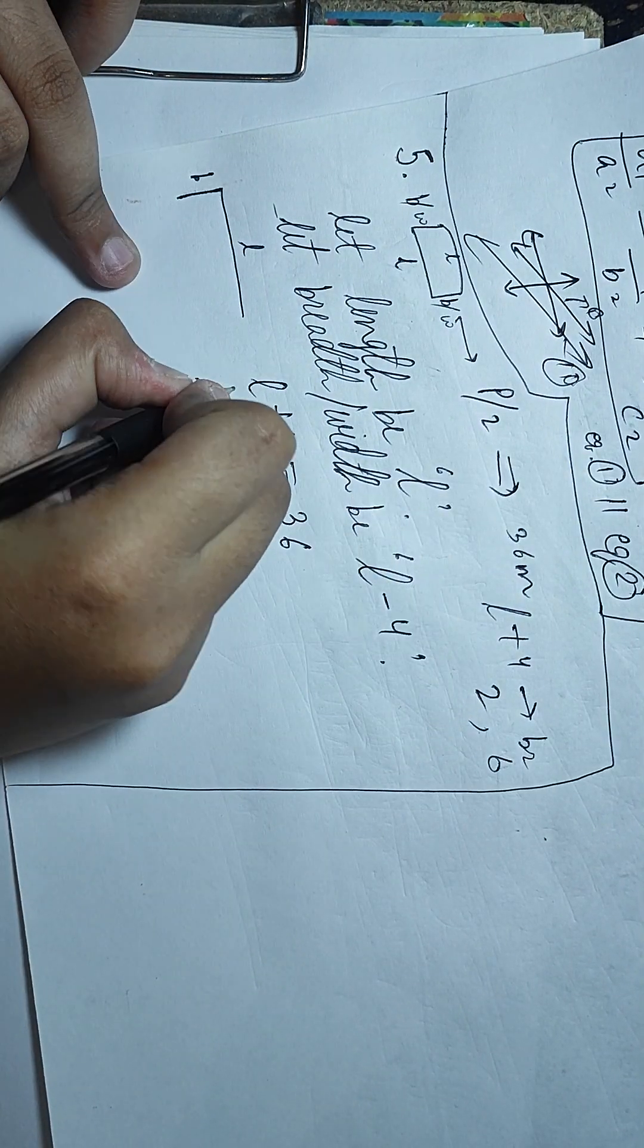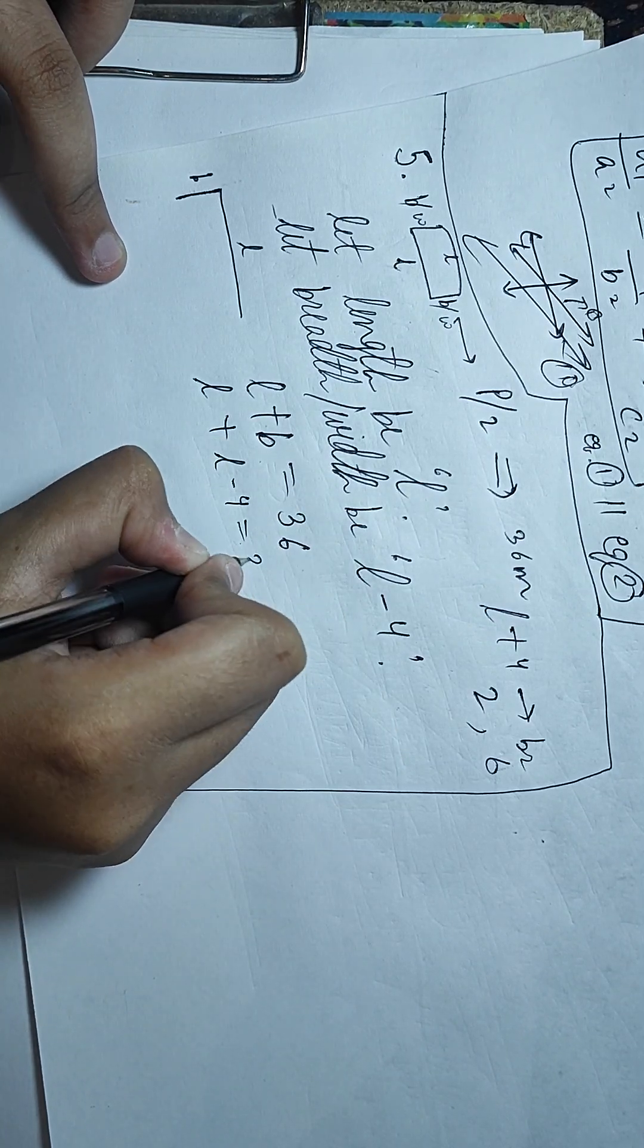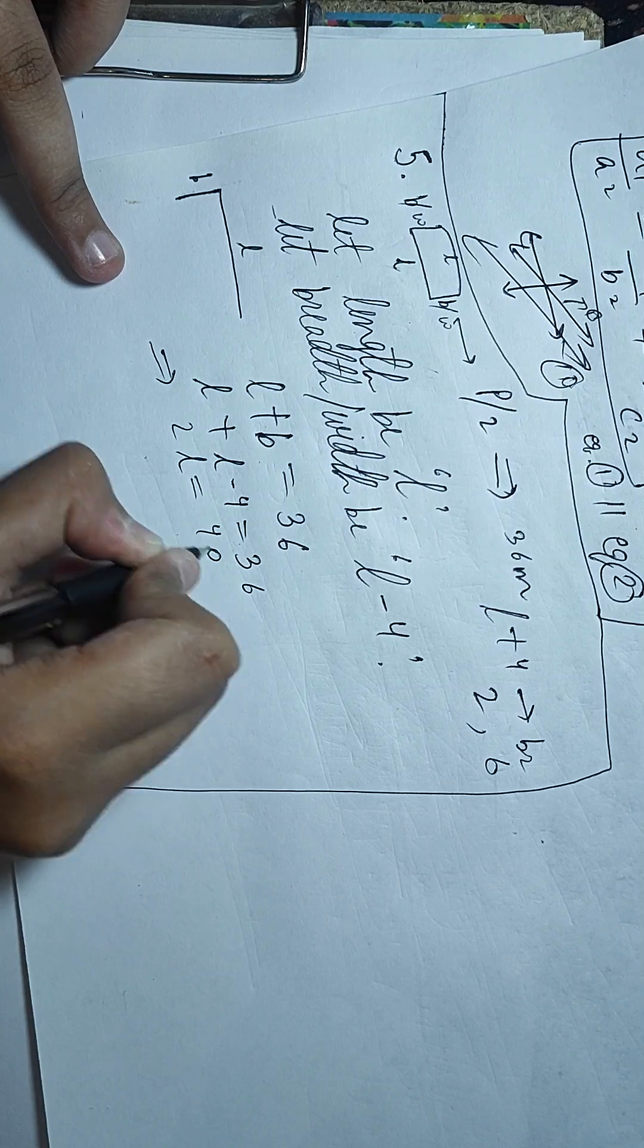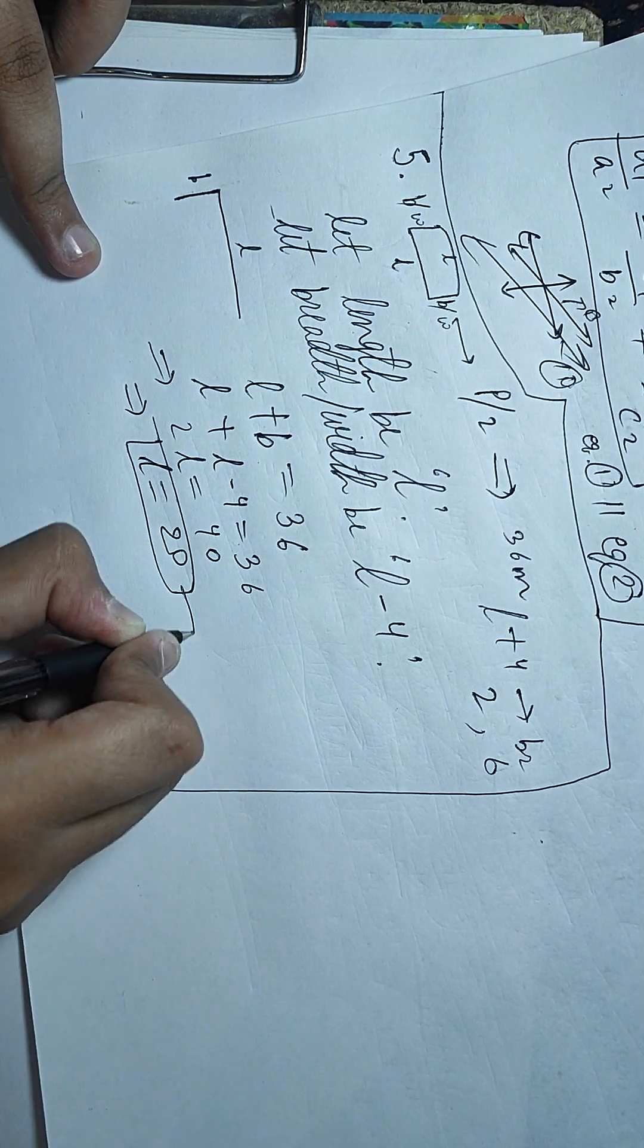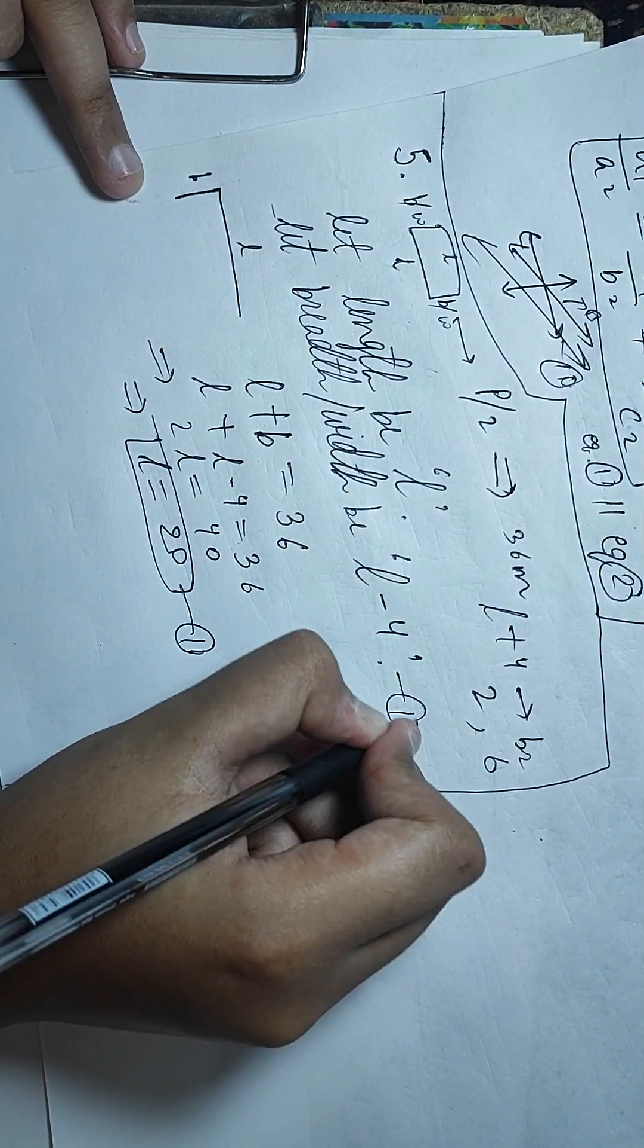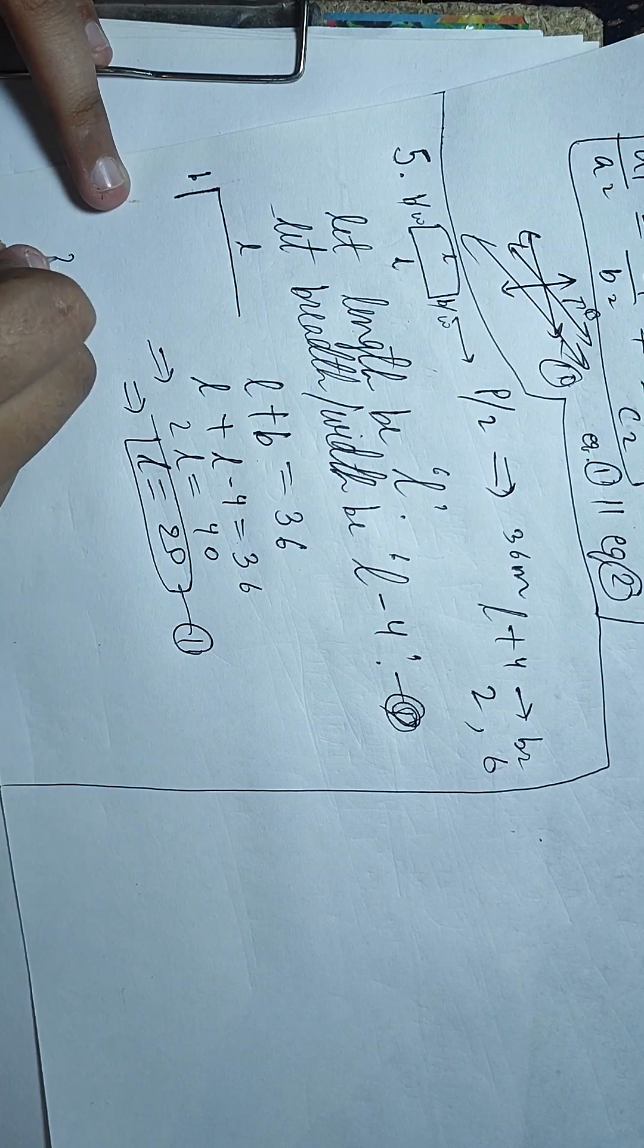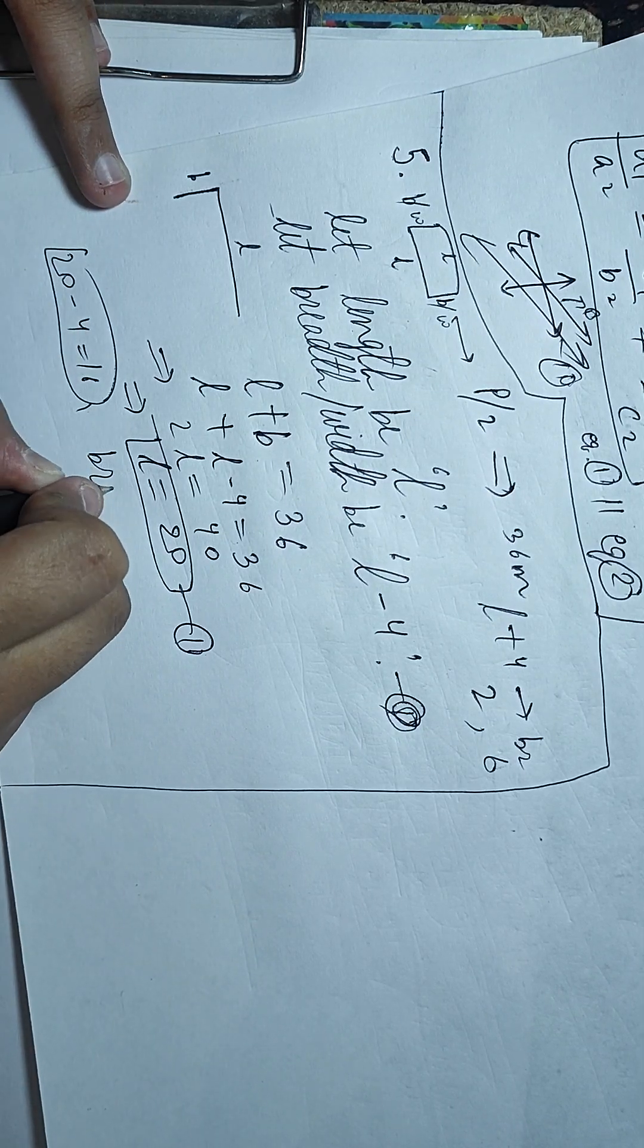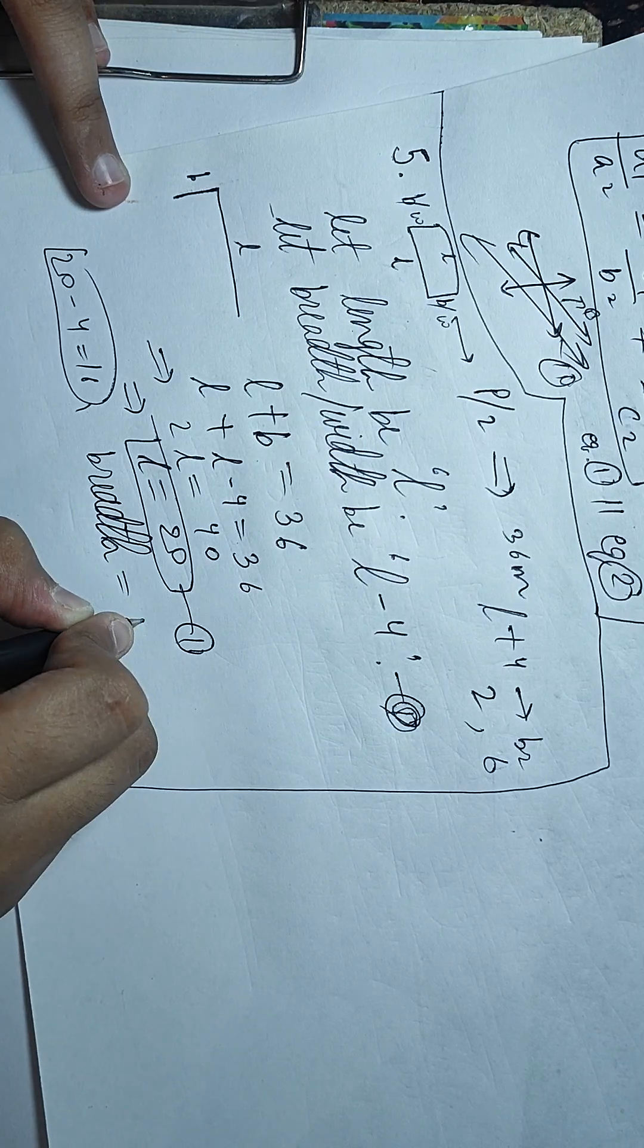We will take L and write L plus L minus 4 is equal to 36. So 2L is equal to 40, L is equal to 20. We will put breadth L minus 4 is equal to 16.